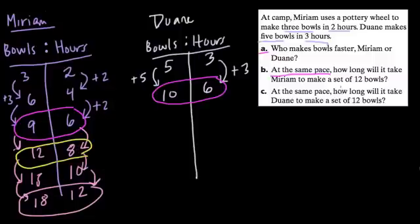At the same pace, how long will it take Dwayne to make a set of twelve bowls? This is where things get interesting, because our ratio table is not going to fall exactly on that amount. If we add this again, three more hours pass - we get nine hours. And then the number of bowls will go up by five, and we get fifteen.